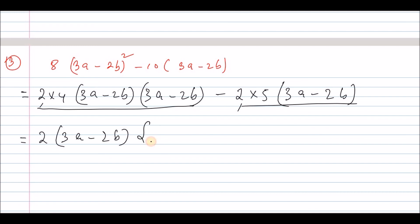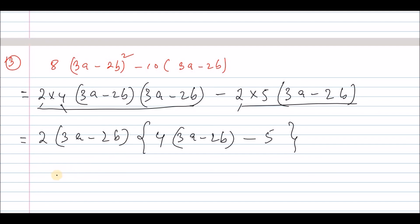So this is the second bracket. This is 2, and this is 3a minus 2b. So this is 4. This is 3a minus 2b. This is 3a minus 2b. This is minus 2, which is 5. So this is 3a minus 2b — the second bracket. So this is 4a minus 2b, or 2a minus 2b.